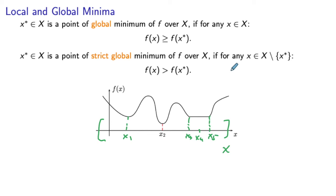The concepts of global maximum and strict global maximum are defined similarly, but we reverse the signs of the inequalities. Here we would have less than or equal to, and for strict, strictly less than. The idea is the same: the point must be the best in the feasible region, or strictly the best — meaning it is the unique maximizer.